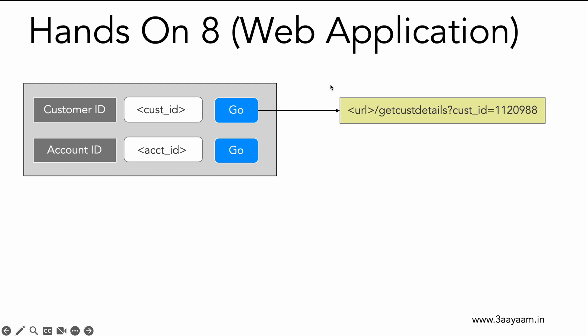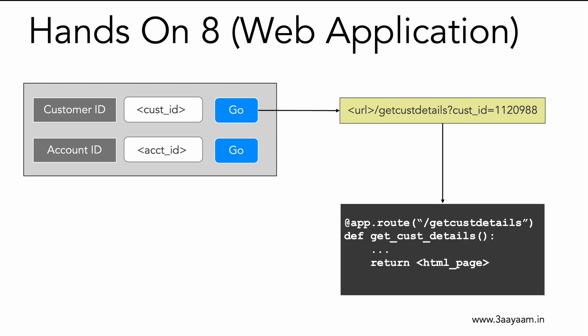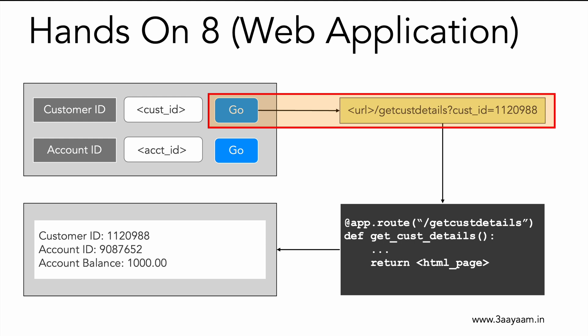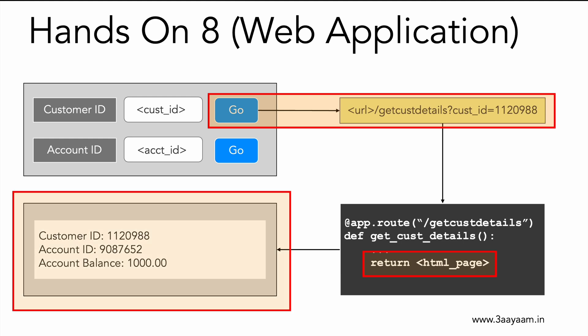Once the button press is converted to a URL endpoint API call, it would go to the Flask application, either in an EC2 instance or a local machine — I'll show you in my local machine, and you can try it in your EC2 instance. The URL endpoint would be mapped to a function definition which gets customer details. Instead of returning a value, we want to show the output in an HTML page, and then that HTML page would show customer ID, account ID, and account balance. The two key points of consideration are: first, converting the button click to a URL endpoint and API call; and second, finding a way to return an HTML page along with variable values.